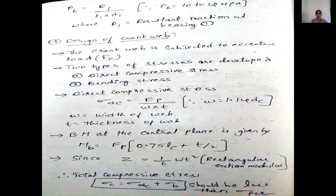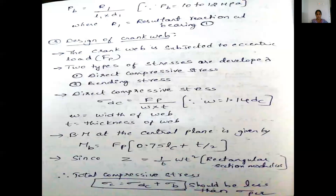Next, the design of crank web. The crank web is subjected to an eccentric load which develops two types of stresses: direct compressive stress and bending stress. Direct compressive stress is sigma_dc equal to Fp by W into T, where W is equal to 1.14 dc. W is the width of the web and dc is the thickness. The bending moment at the central plane is mv equal to Fp into 0.75 Lc plus T by 2. Section modulus of the rectangular section is Z equal to 1/6 W T squared.